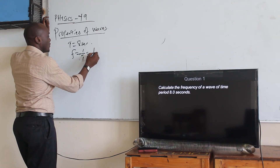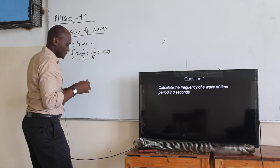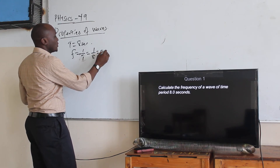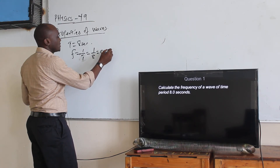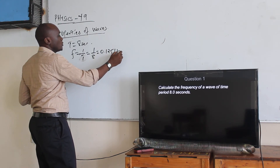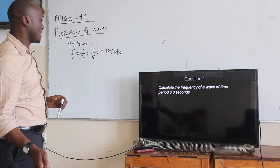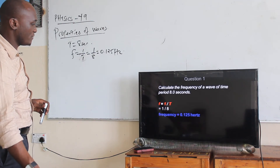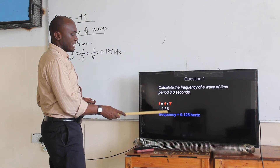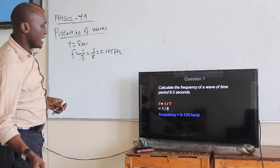Frequency equals one over T, which is one over eight. That gives us zero point one two five hertz. So frequency is equal to zero point one two five hertz.